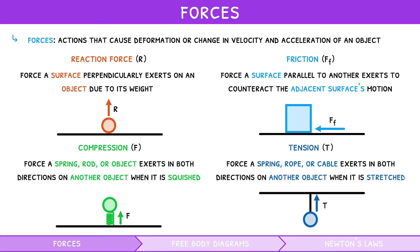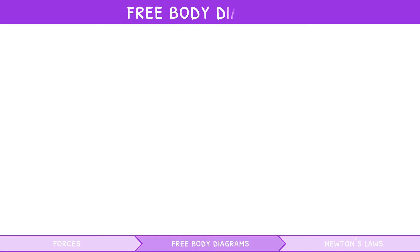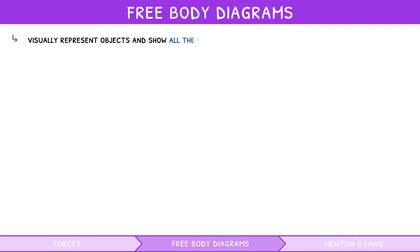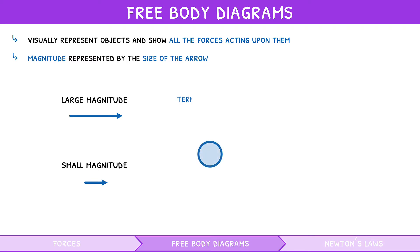Forces are quite abstract concepts, so how are they represented in IB Physics questions? This is the role of free body diagrams. These visually represent objects and show all the forces acting upon them as arrows pointing in the direction that they are acting. The magnitude of the force is represented by the size of the arrow. For example, the object shown below is falling at terminal velocity, where the weight of the object is acting down and the drag force is acting up with equal magnitude.